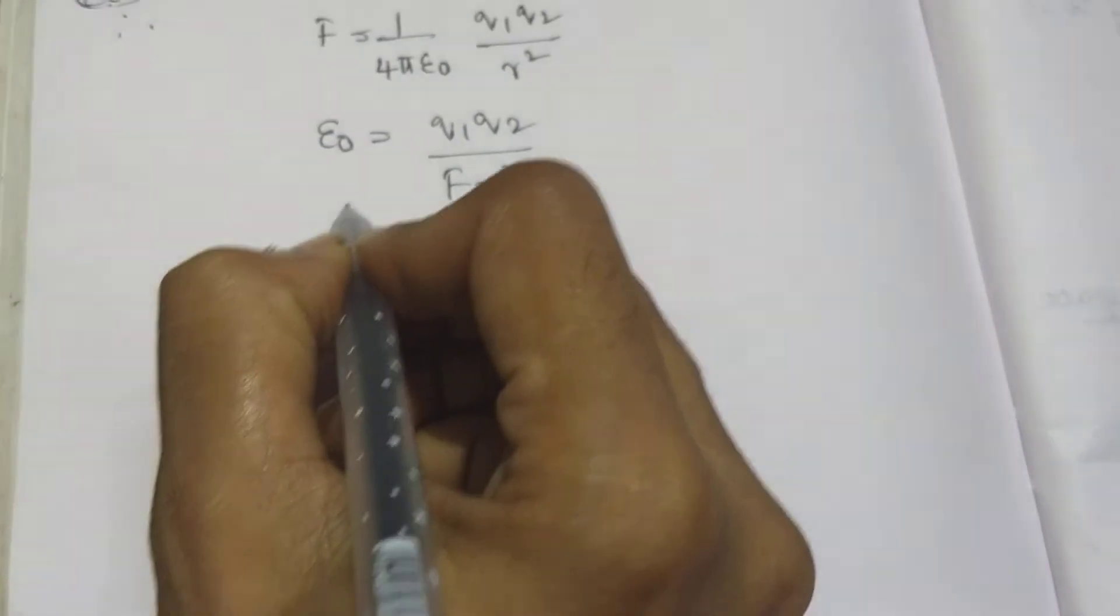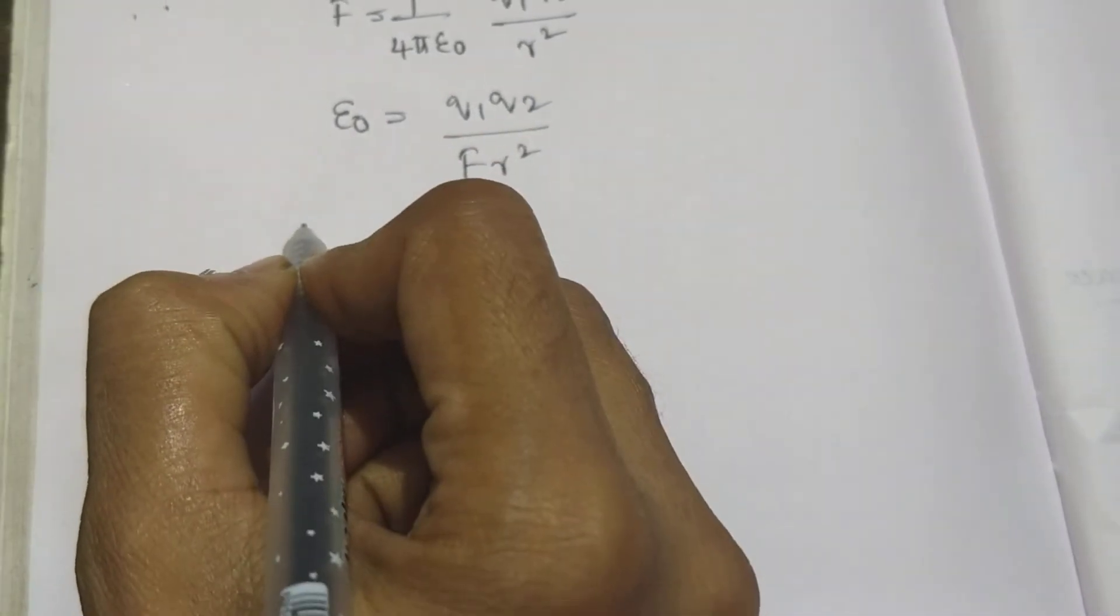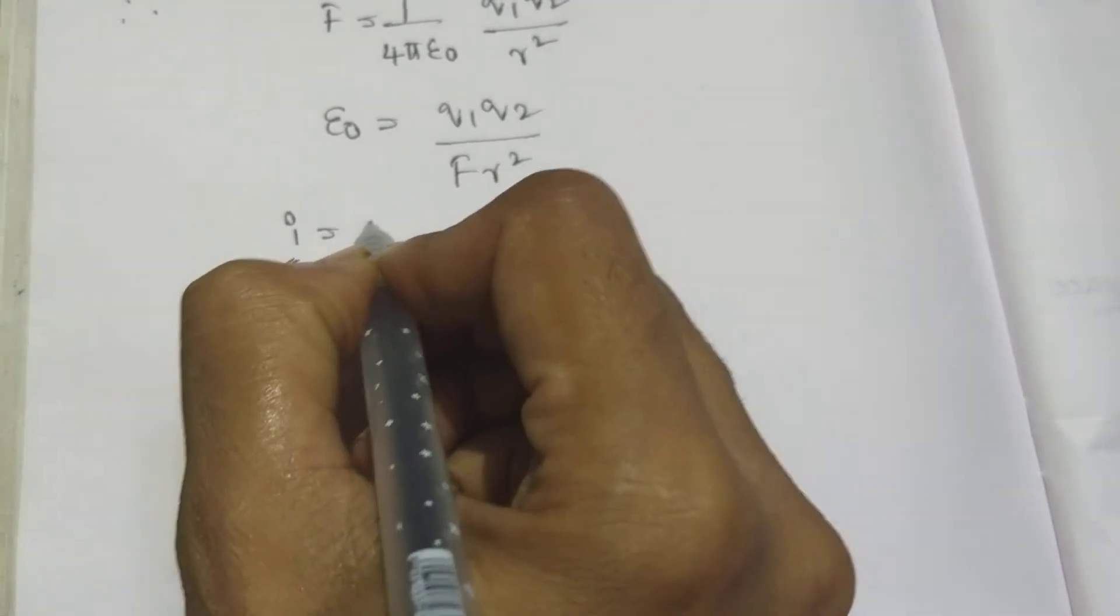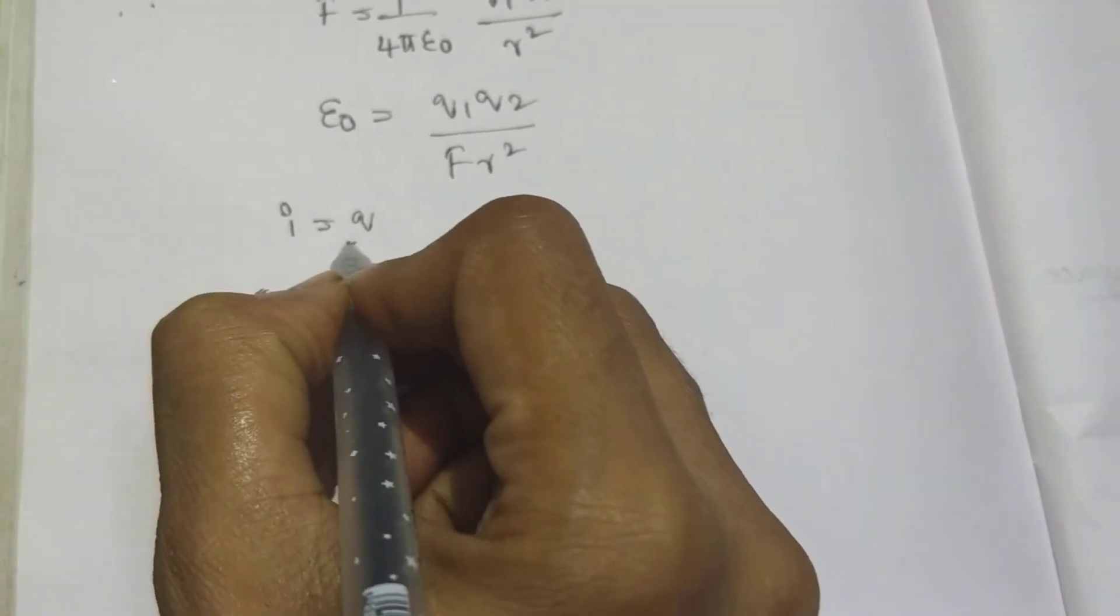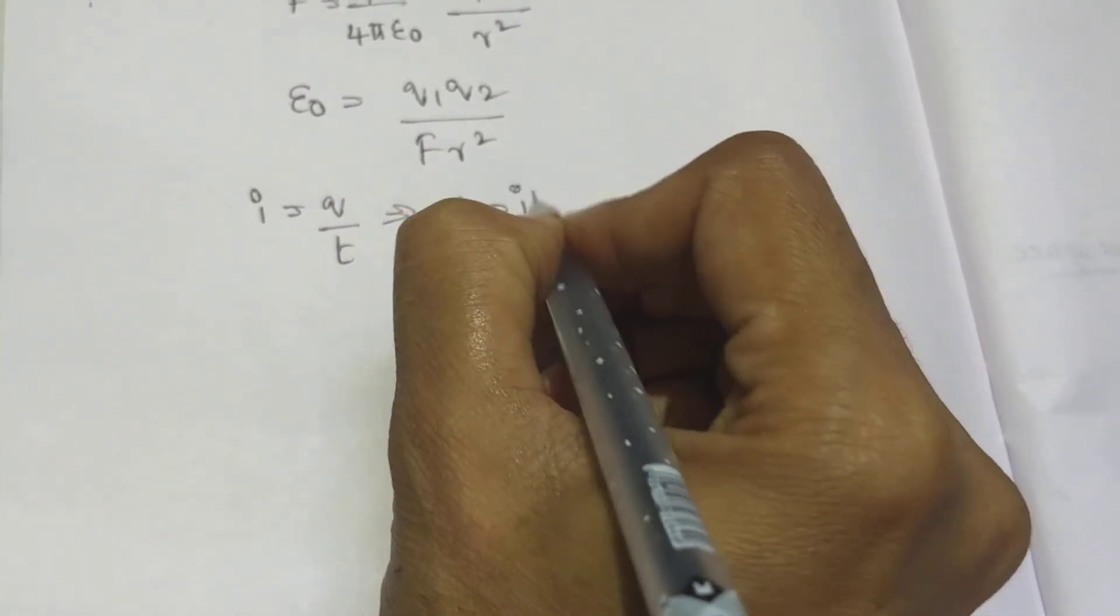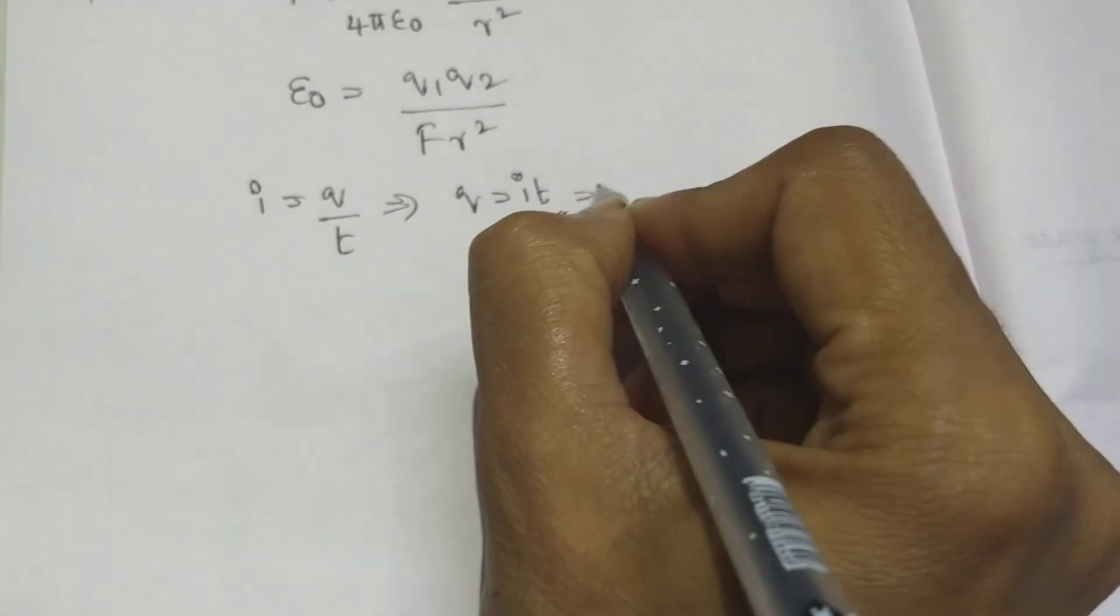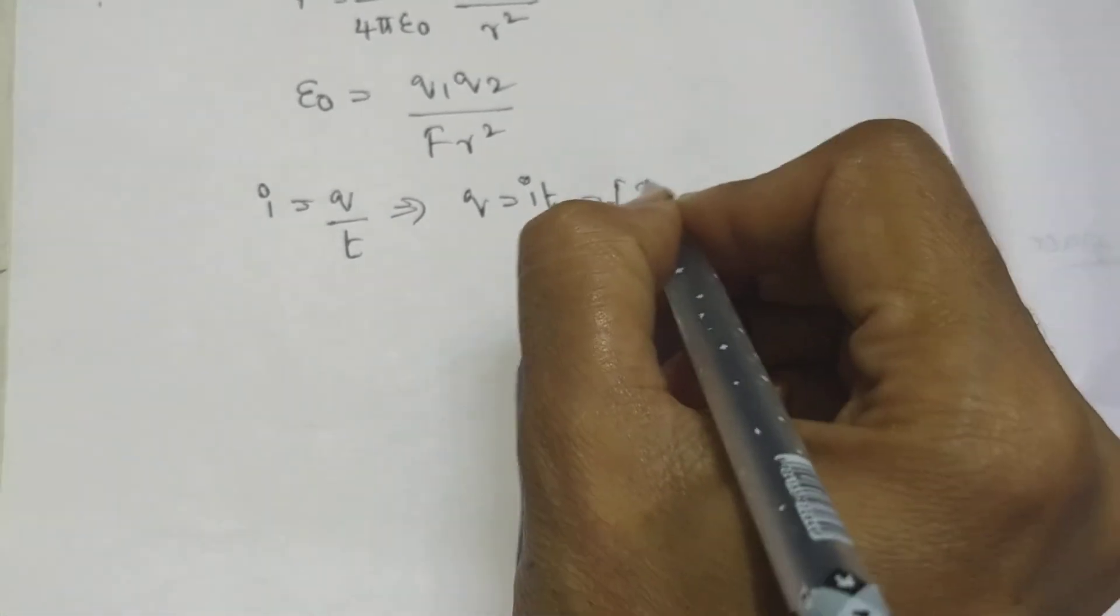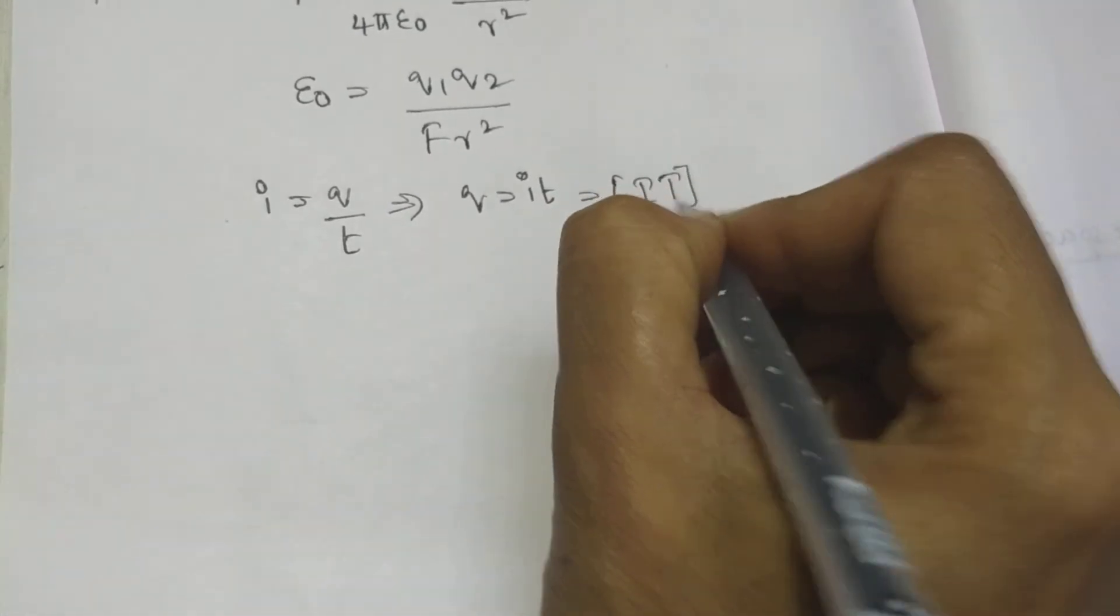What is the dimension formula of Q? From current definition, I is equal to rate of charge, rate of flow of charge. This implies Q equals I into T. So dimensional formula, we can write capital I into capital T.